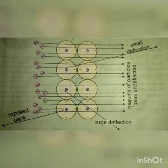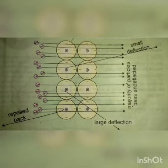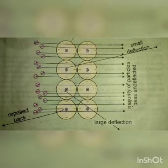Gold foil aur alpha particles ke ilaawa, Rutherford ne ek photographic plate aur screen use ki jiske upar unhone alpha particles ka effect dekhna tha. Wo screen zinc sulfide se coated thi. Us screen ke upar jab alpha particles ki bombardment gold foil pe, gold ke atoms pe karayi gayi, to unka effect dekhna tha. Aur isi experiment ki base pe Rutherford ne plum pudding model ko galat sabit kiya.